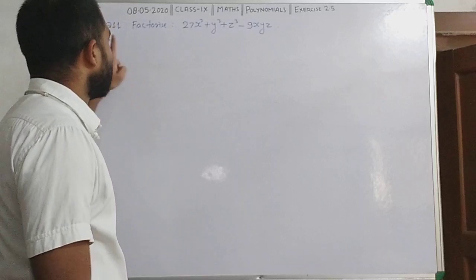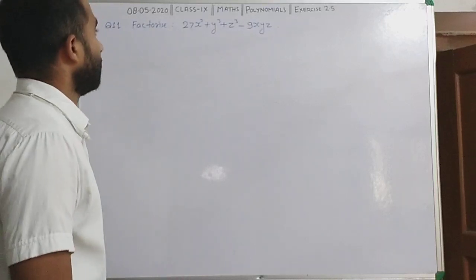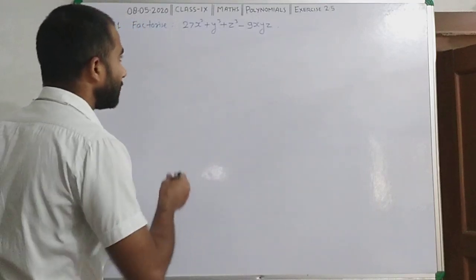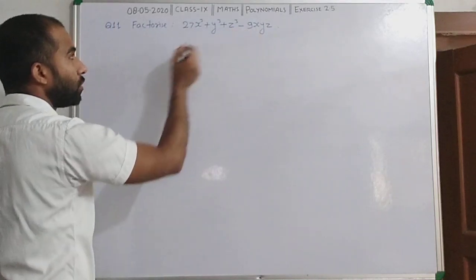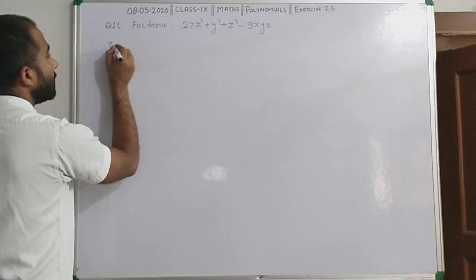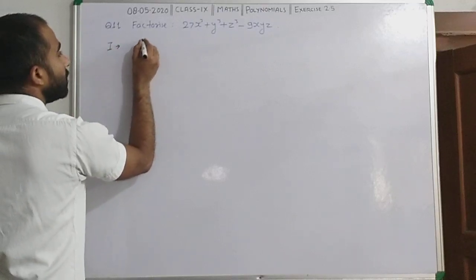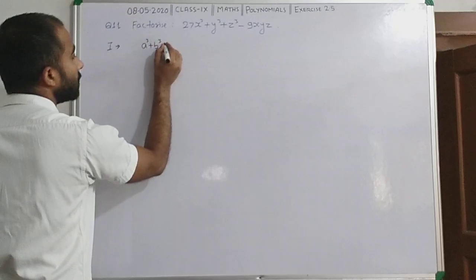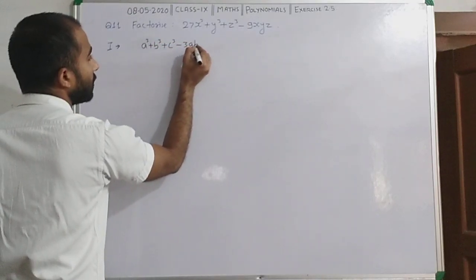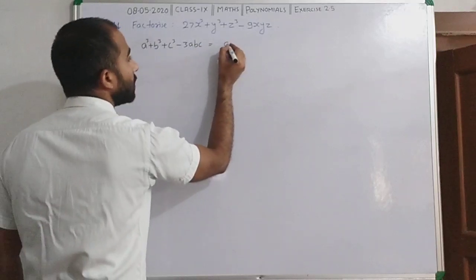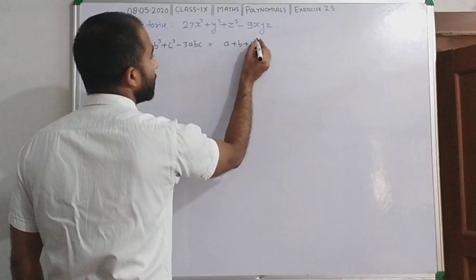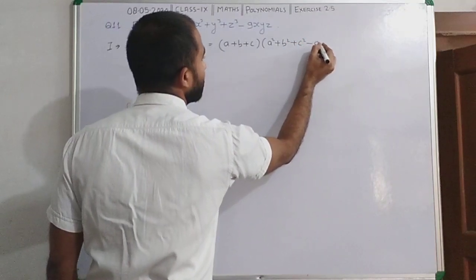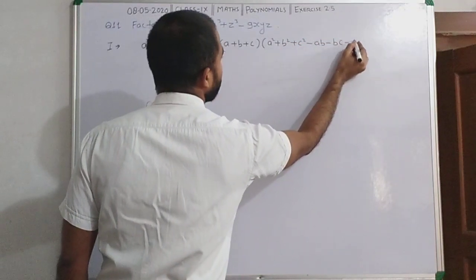Now this is question number 11 of exercise 2.5. चलिए देखते हैं — हम लोगों ने starting में सारी identities देखी थीं. यह last वाली identity है: a cube plus b cube plus c cube minus 3abc वाली identity. तो उस identity को हम लिख लेते हैं: a³ plus b³ plus c³ minus 3abc equals (a plus b plus c)(a² plus b² plus c² minus ab minus bc minus ca).